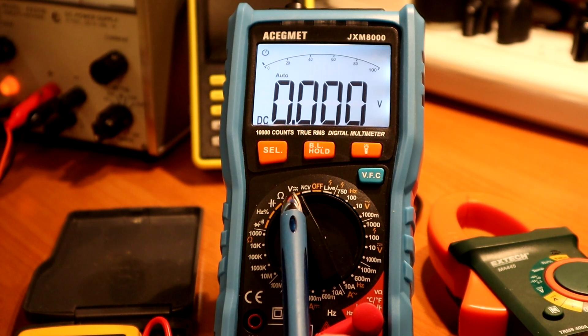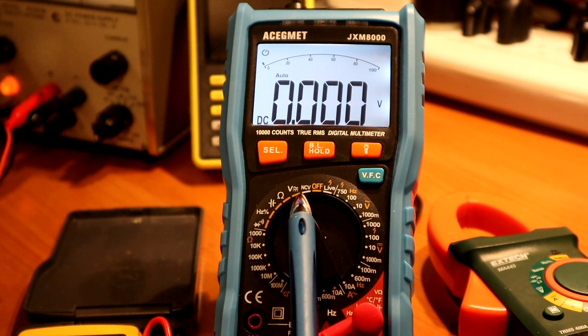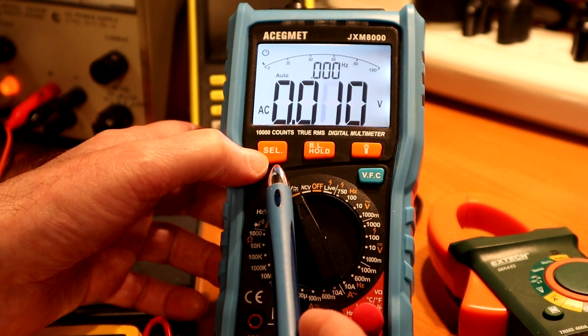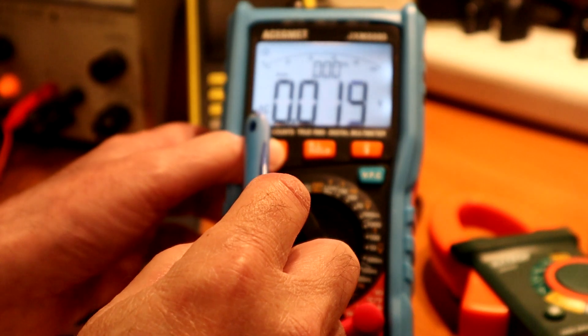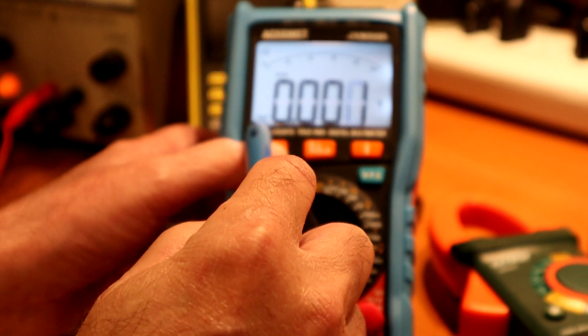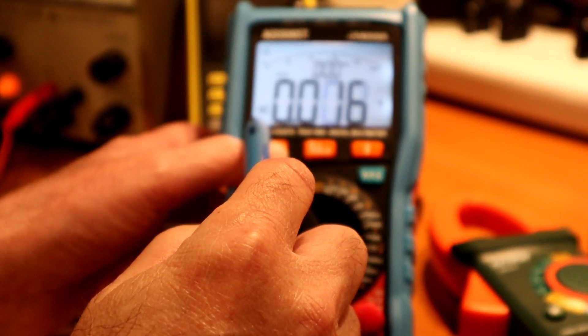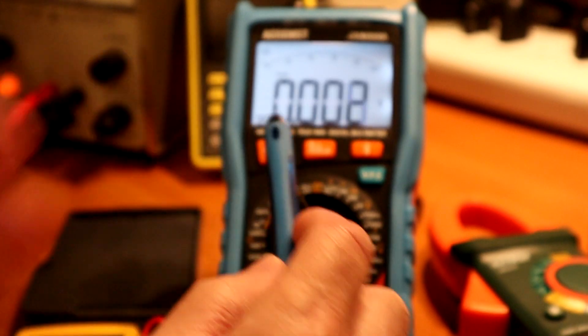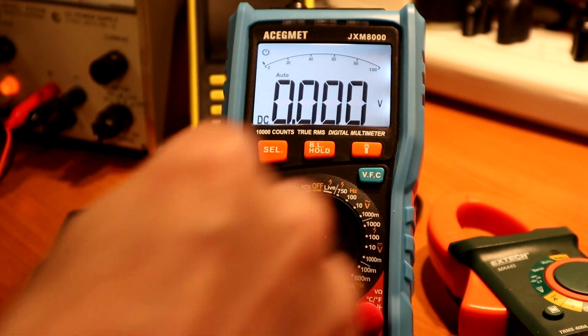this is the DC voltage range or AC. So if I hit this select button, I can go between AC and DC. So I'm going to leave it in DC mode. Then, of course, we have ohms.